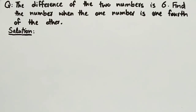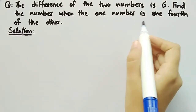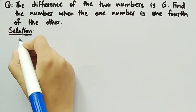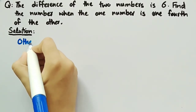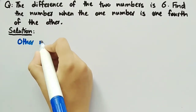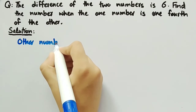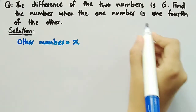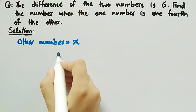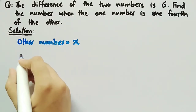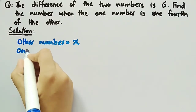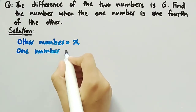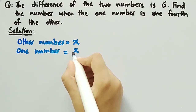Since it is given that one number is one-fourth of the other, we consider the other number to be equal to x. Since one number is one-fourth of the other number, one number is equal to x by 4.